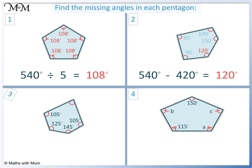Question 3. 145 plus 125 equals 270. Plus 105 equals 375. Plus 105 equals 480. 540 take away 480 equals 60. So the missing angle is 60 degrees.